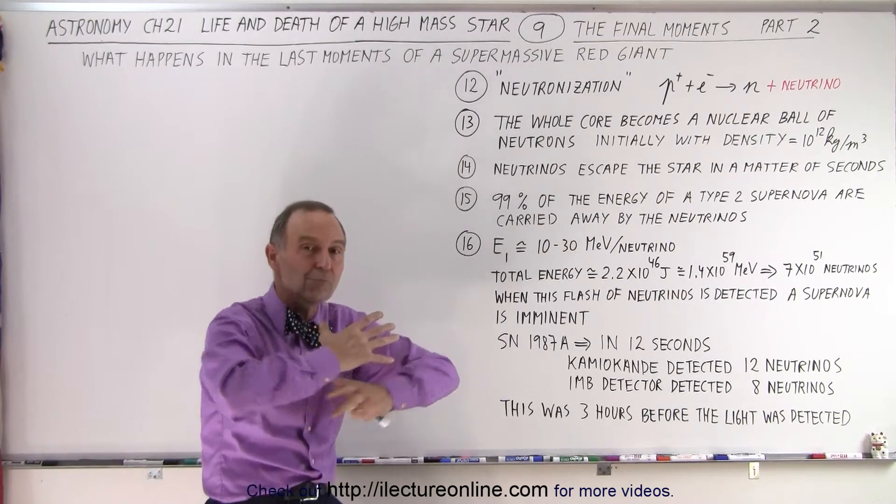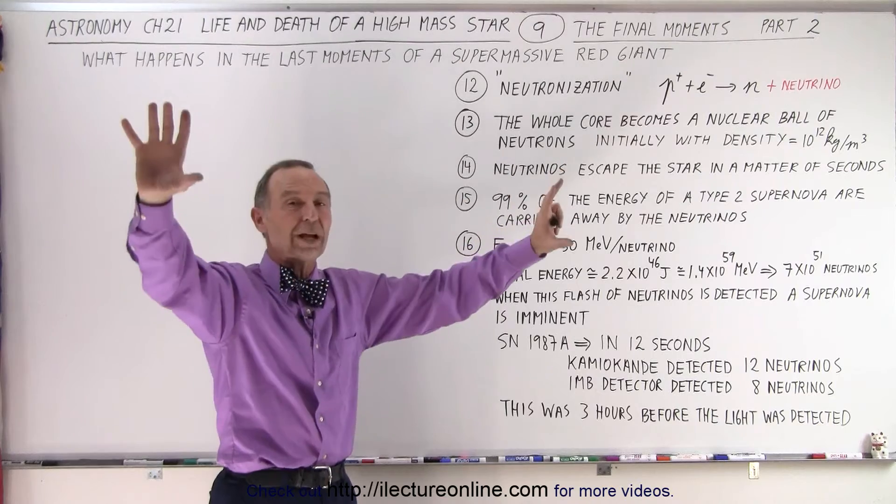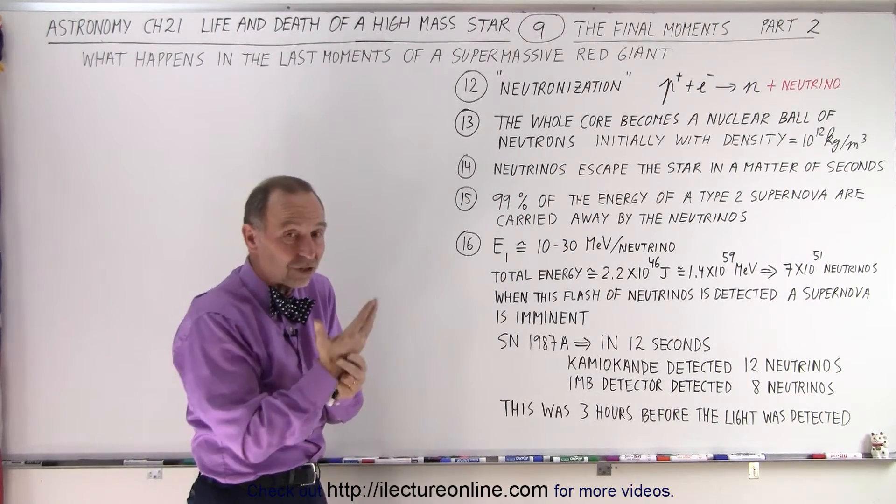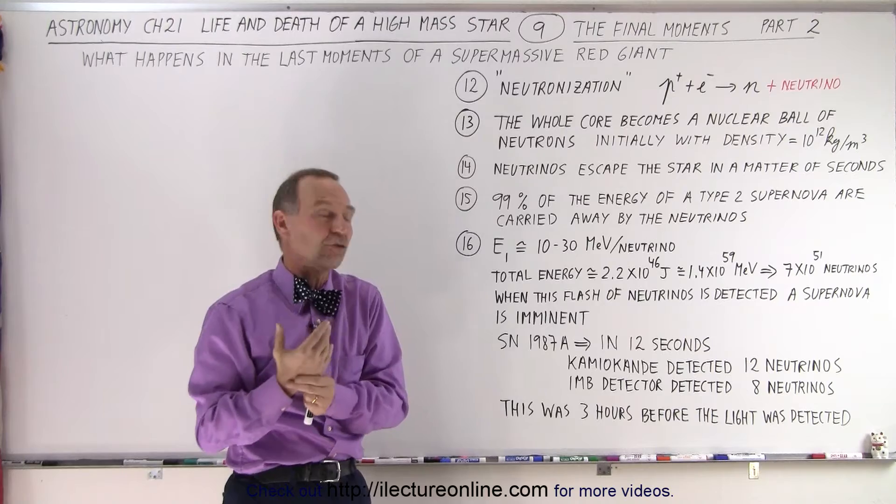These neutrinos then move out of the star, move in all directions. And from a distance, like the Earth, we can actually see that flash of neutrinos.